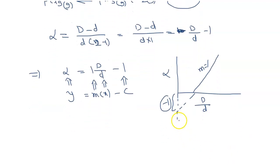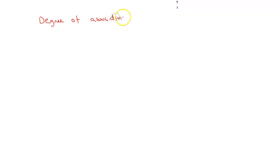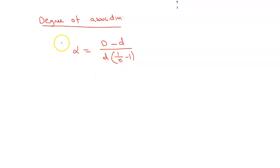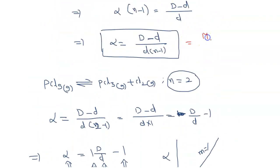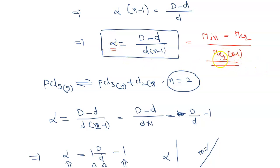For degree of dissociation, the formula can also be written as alpha equals (capital D minus small d) divided by (small d times (1 minus 1/n)). Additionally, this formula can be written in terms of molecular weights: alpha equals (initial molecular weight minus equilibrium molecular weight) divided by (equilibrium molecular weight times (n minus 1)). Based on these formulas, we can solve many problems in equilibrium based on the relation between alpha, capital D, and small d.